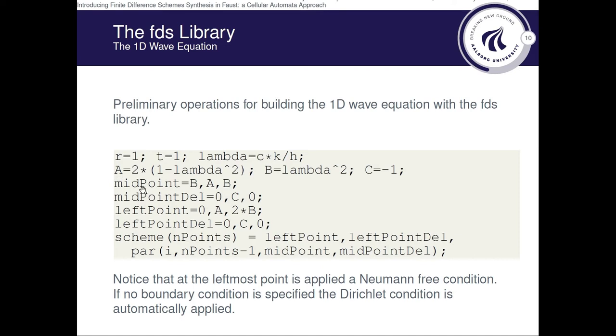We then have to stack them in parallel to form a coefficient matrix for the current state of the midpoint and the delayed version. We don't need the delayed version of the neighbors, so we simply put 0 here.